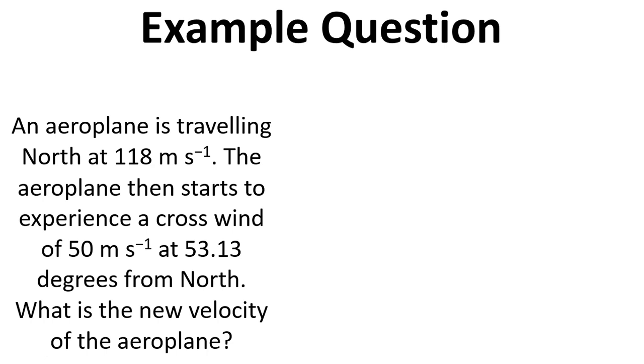Now, for an example question, we've got an aeroplane travelling north at 118 metres per second. The aeroplane then starts to experience a crosswind of 50 metres per second at 53.13 degrees from north. What's the new velocity of the plane? First of all, let's draw a diagram.